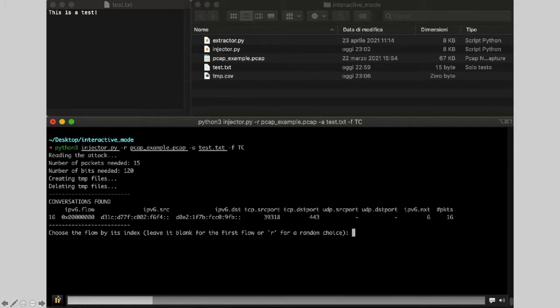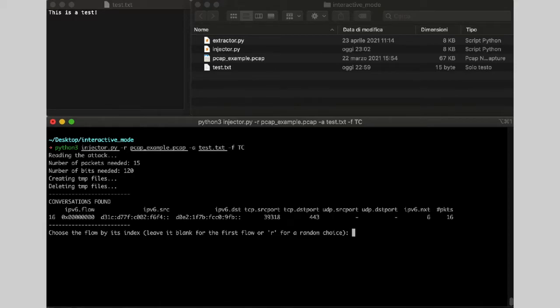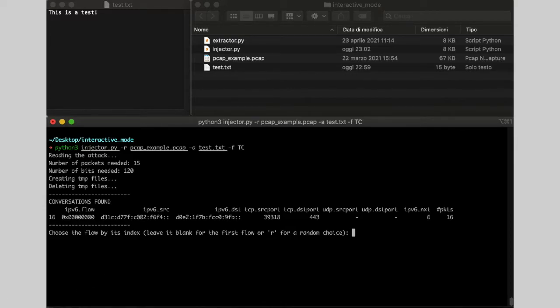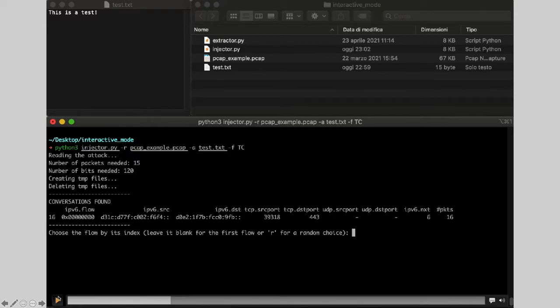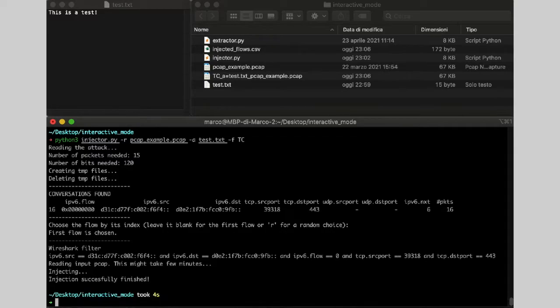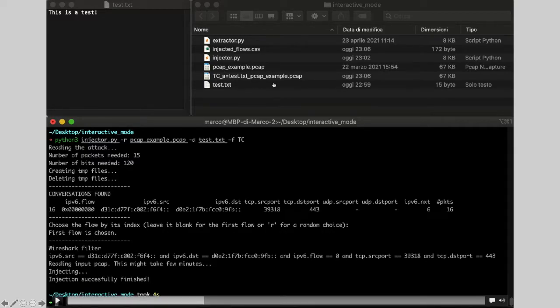So, once it is launched, pcapStego finds the conversations that are able to contain the secret. And in this mode, the user can choose the conversation that he wants to inject. In this case, there is only one. So, once the conversation is selected, pcapStego embeds the secret in the file and produces the output file and the CSV file.